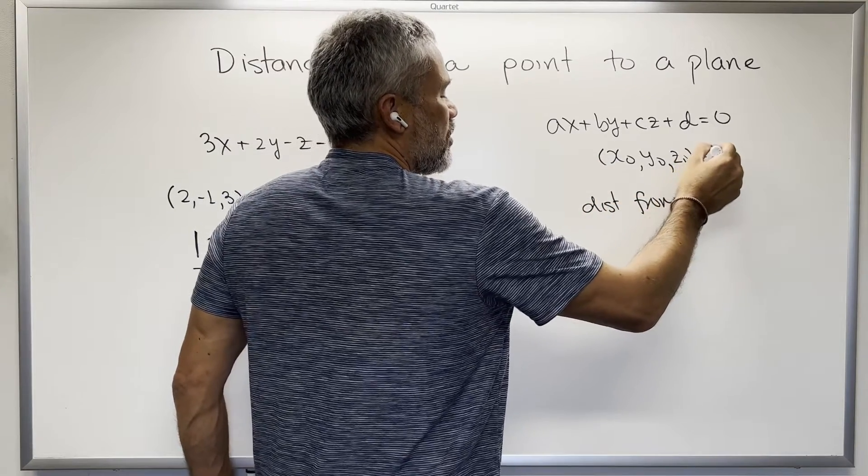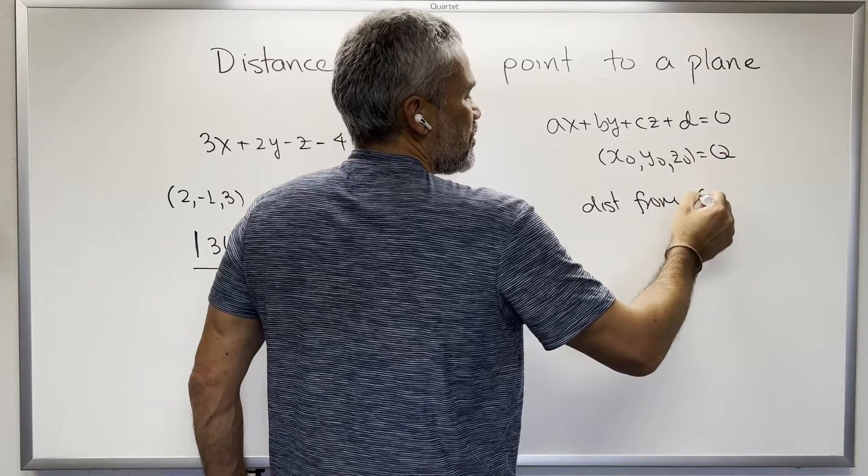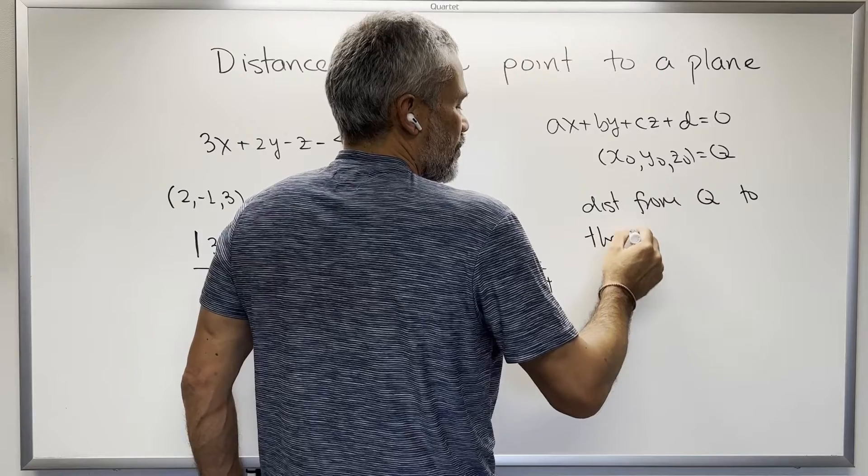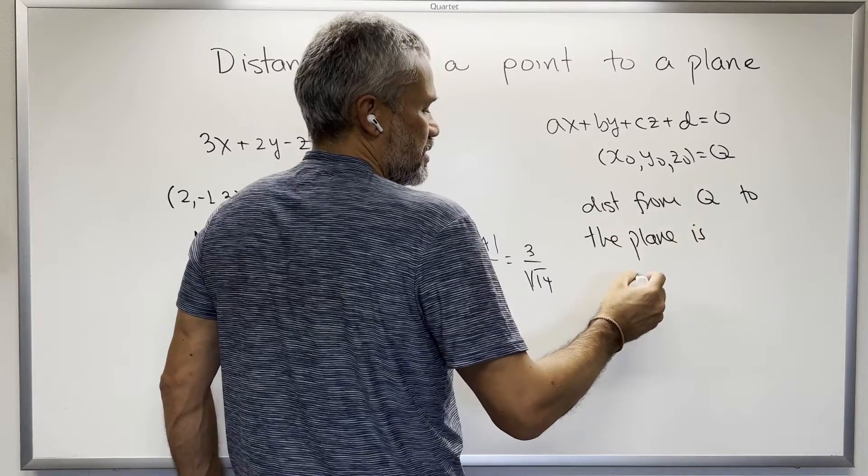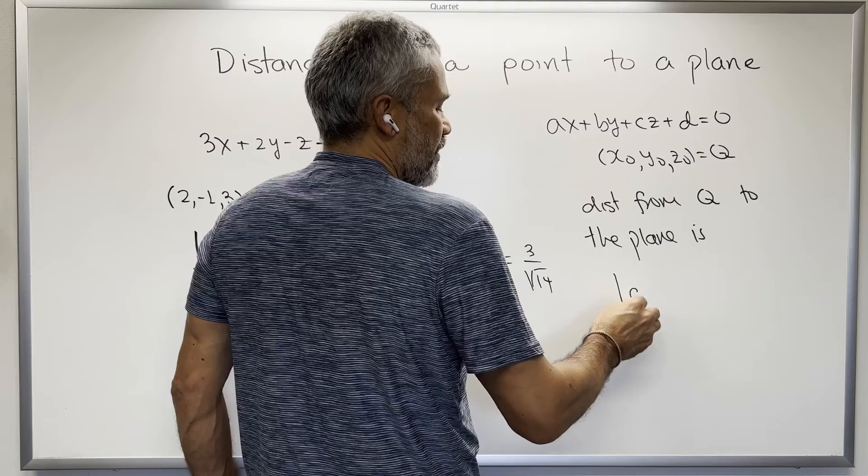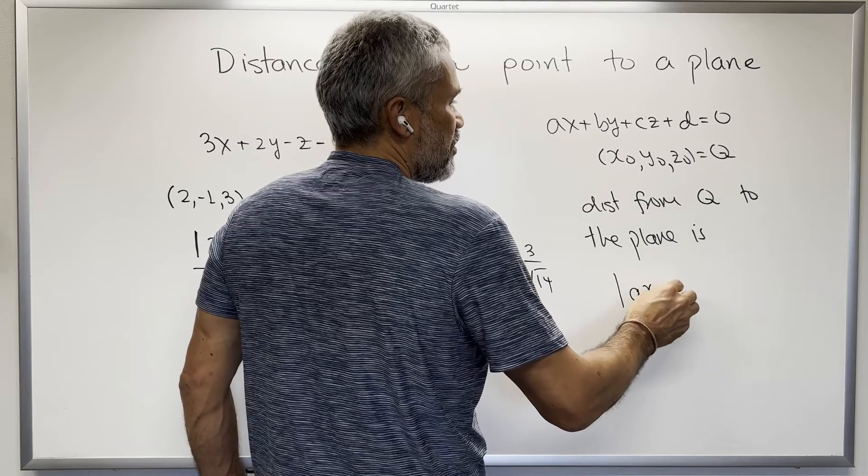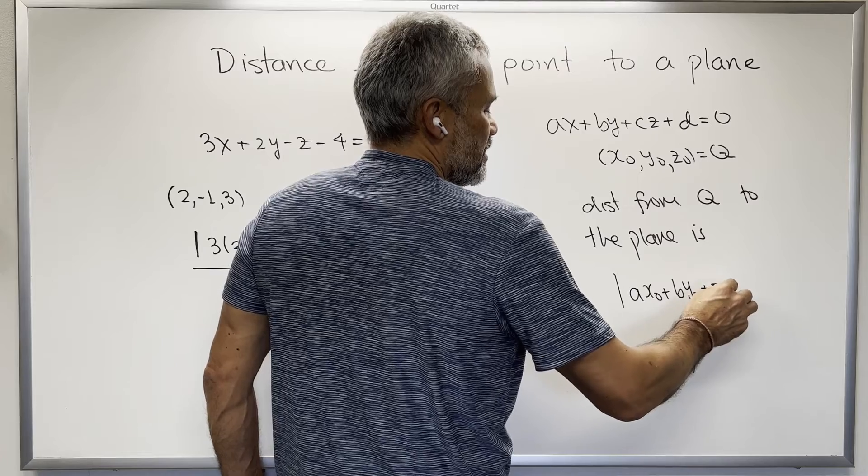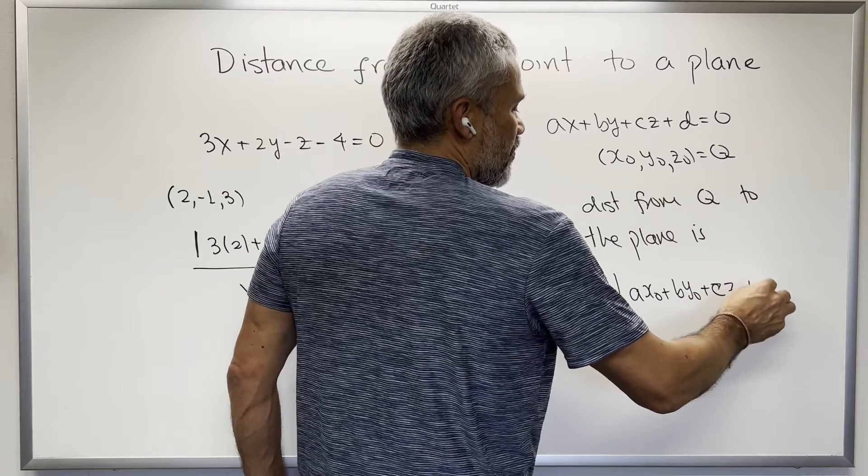From this point, let's call it Q, to the plane, is absolute value of a times x sub 0, plus b times y sub 0, plus c times z sub 0, plus d...